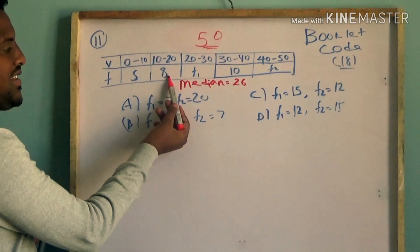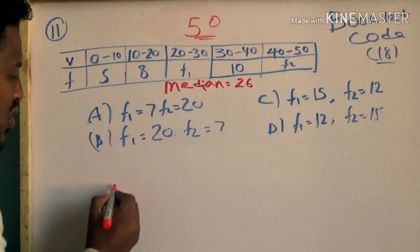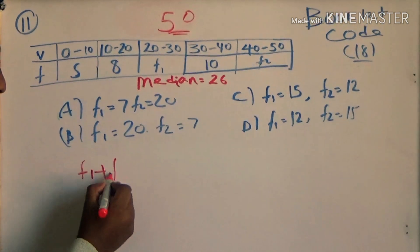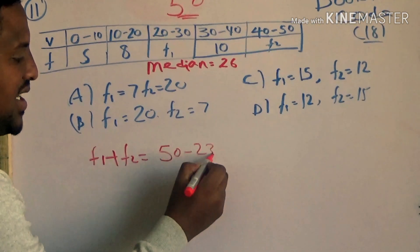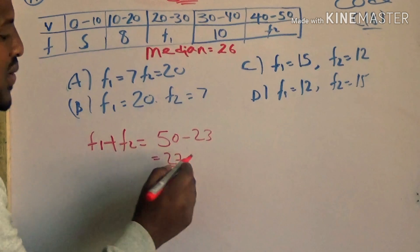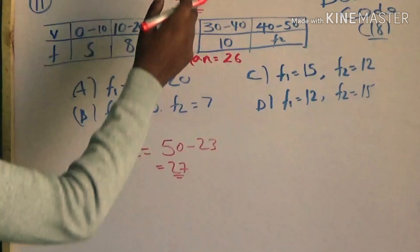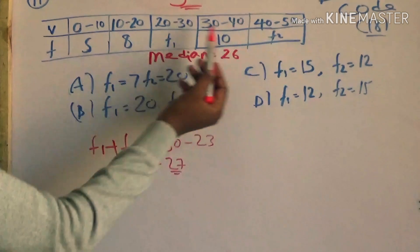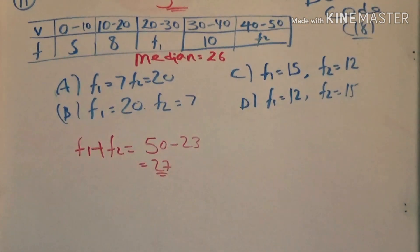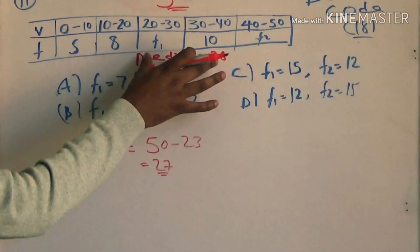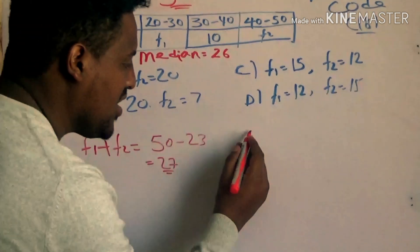So 5 plus 8 is 13, 13 plus 10 is 23. So f1 plus f2: the total is 50. f1 plus f2 equals 50 minus 23, which is 27. That is equation 1. Now we need to identify the median class — the median falls in class number 4, the 60s group.